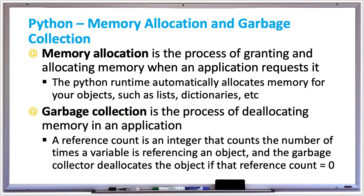In Python, memory allocation is the process of granting and allocating memory when an application requests it. The Python runtime automatically allocates memory for your objects, such as lists, dictionaries, and so on, and it does this by requesting memory from your operating system.